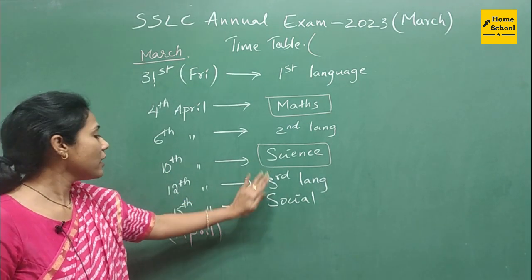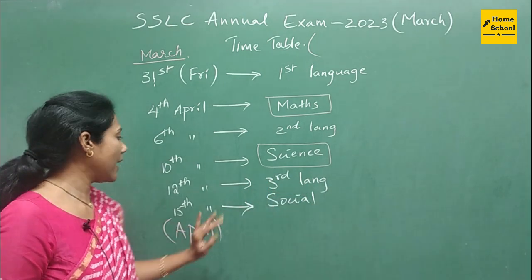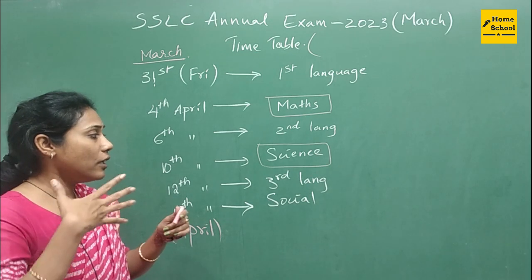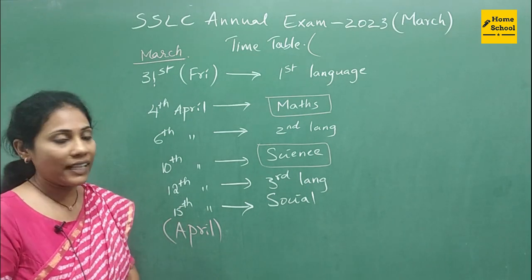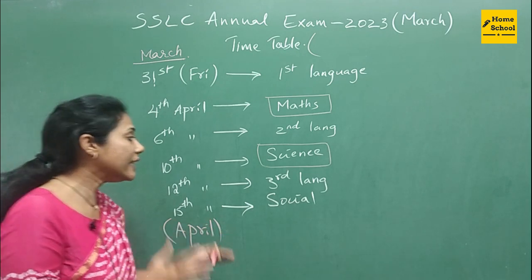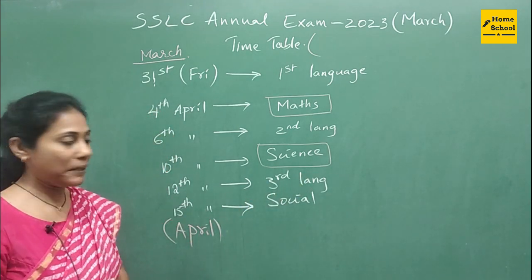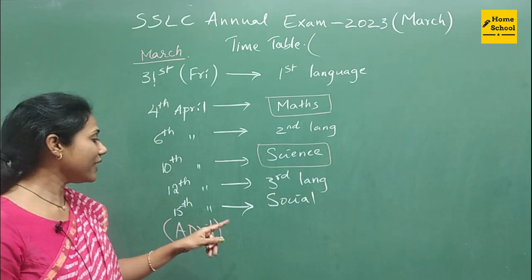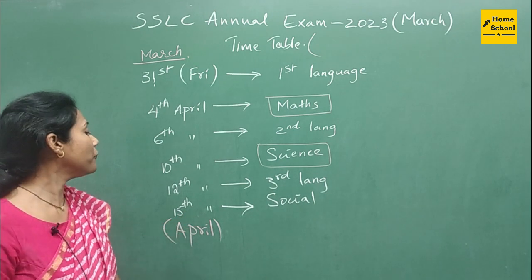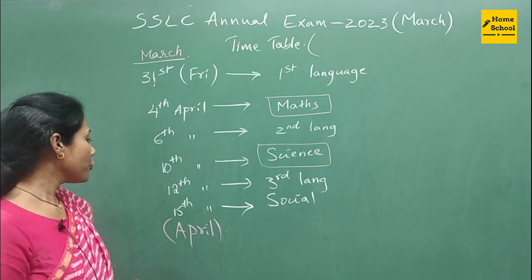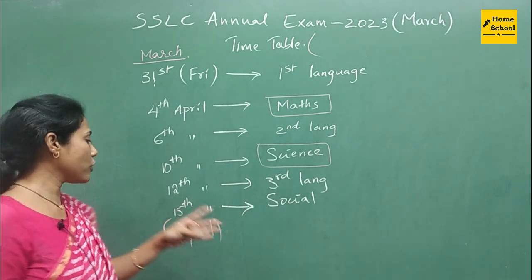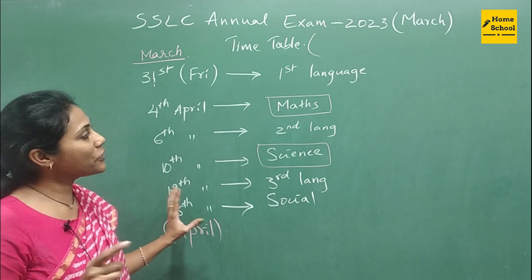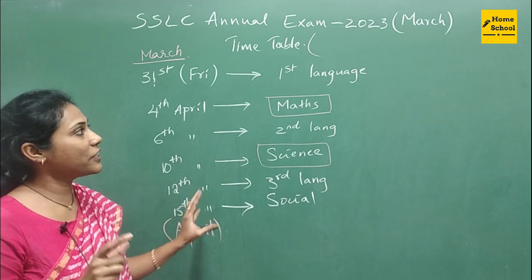After your Science, you are going to give your third language on 12th of April. Most of the schools follow Hindi as a third language, so you have your Hindi examination on 12th of April. The final exam is Social Science, and that examination is on 15th of April. You have 13th and 14th — two days of gap for Social Science. So this is your final examination timetable.